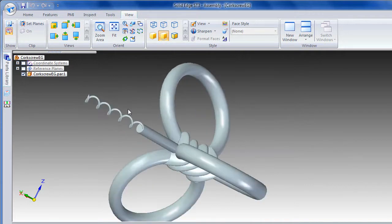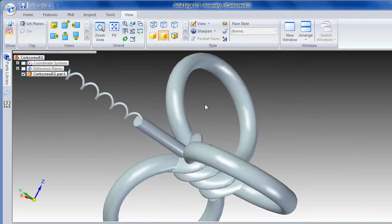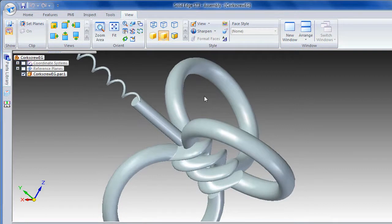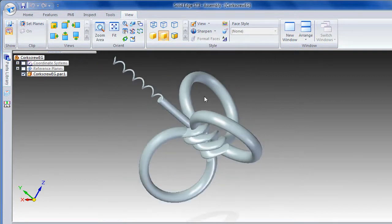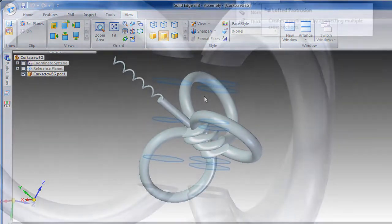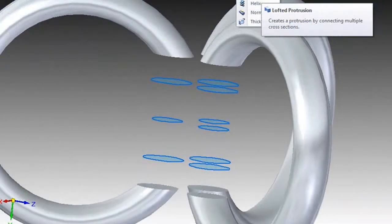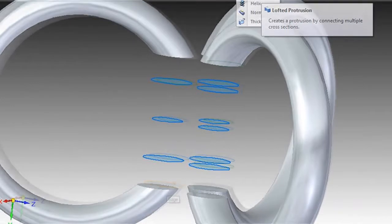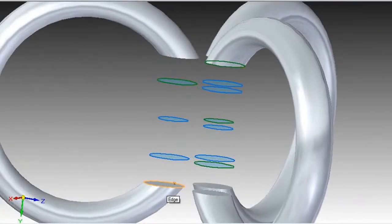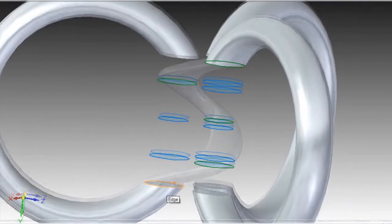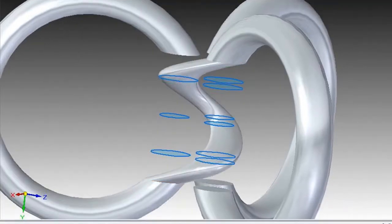One of her designs, called Corkscrew, features three rings held together by a complicated series of knots. I asked her to explain how she managed to do that. So I created five different planes. Two of the planes were at the edges of the loop, one in the center, and then two between the center and the loop. So I drew circles of different sizes on each of those and lofted them together.